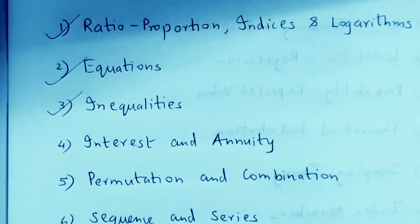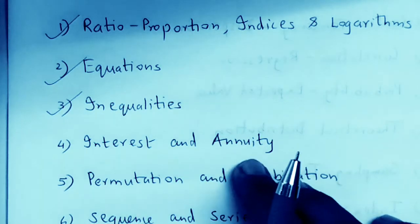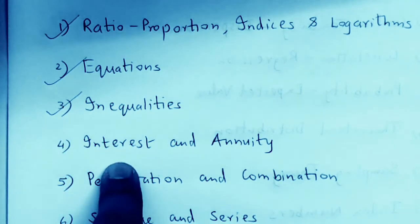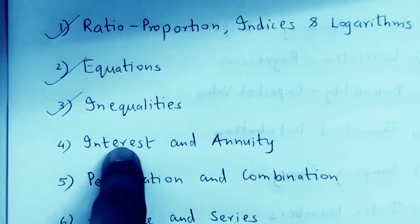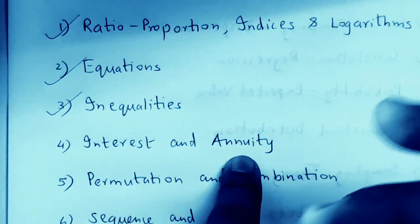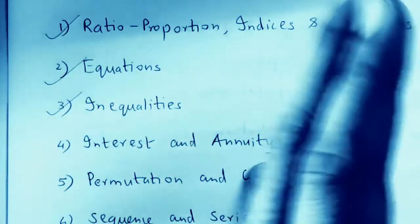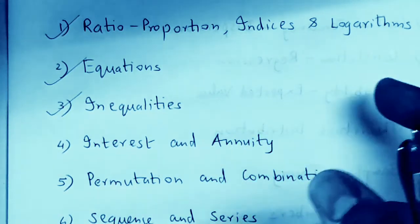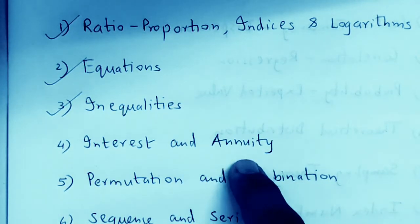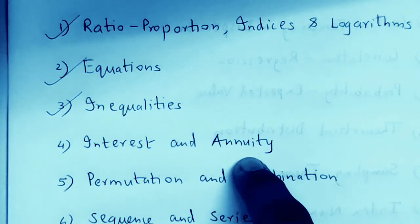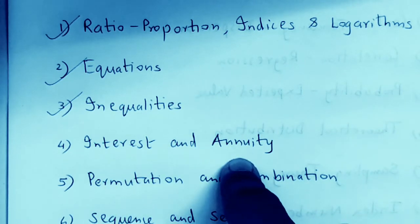Interest and Annuity is not difficult. The key is not to confuse where to apply the interest formula versus the annuity formula. If the entire sum is invested at once, that is interest. If money is deposited or paid off in installments — like rupees 3,000 per annum — that is annuity. For loan-related sums, use the present worth formula; for sinking fund sums, use the accumulated value formula. Just a couple of formulae and you can easily score marks here.